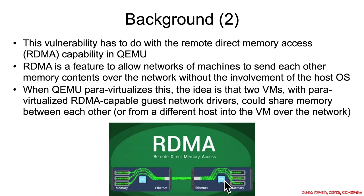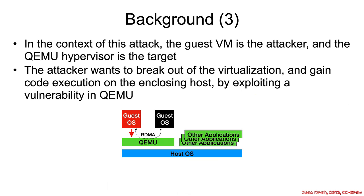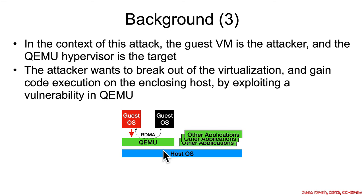Or maybe a host out over the network could talk into a VM that has para-virtualized RDMA support. In the context of this attack, we're concerning ourselves with a malicious guest OS that wants to break into the hypervisor — break into QEMU — and in so doing gain code execution capabilities in the context of an application running on the host OS, from where they could potentially do a privilege escalation to further take over the host OS.